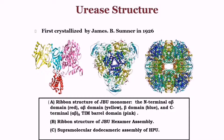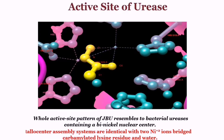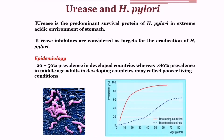This is a crystalline form of urease structure and it was first crystallized by James B. Sumner in 1926. Part C is the supermolecular and this is the active site of urease, which resembles the bacterial ureases contained by a nickel nuclear center.